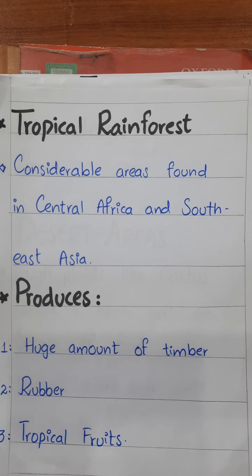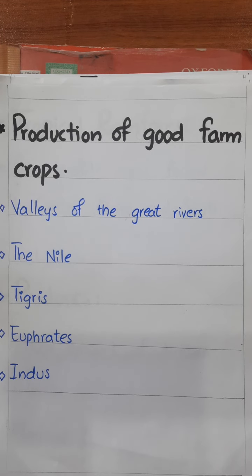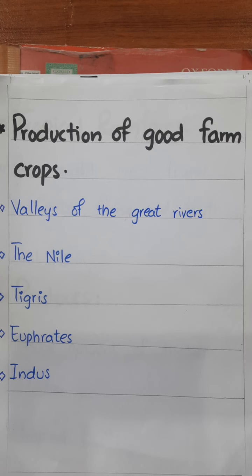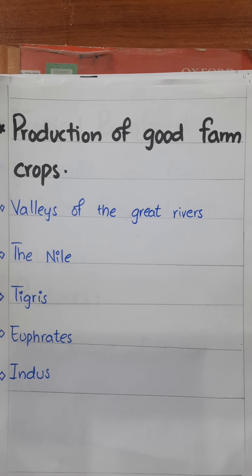In other countries, good farm crops are produced. Most of the Muslim countries are agricultural countries and good farm crops are produced here, made possible by water. The main rivers of the Muslim world are the River Nile, River Tigris, River Euphrates, and River Indus. The soil here is very fertile and there is plenty of water, so that is why it produces a good amount of food crops.